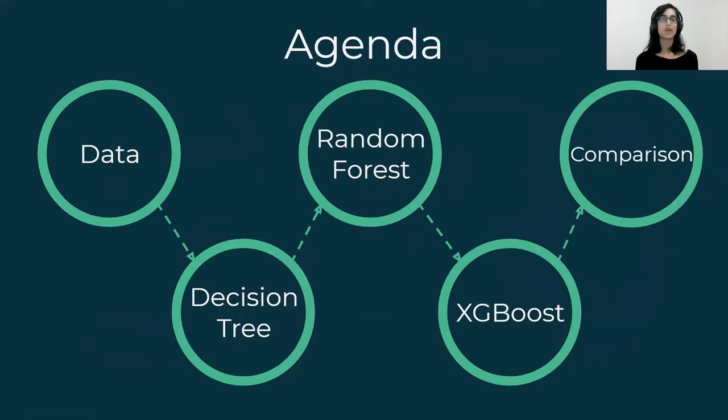The first thing we're going to talk about is the datasets and the process of extracting features from songs. Then we're going to see how to build a decision tree and how it performs in this case of genre classification. Then we'll talk a bit about random forests and dive into XGBoost and see how they improved their results. And we'll finish with a comparison to other machine learning models.